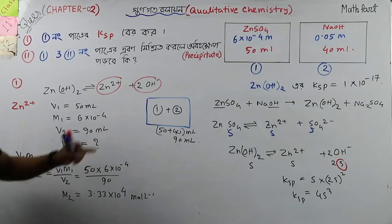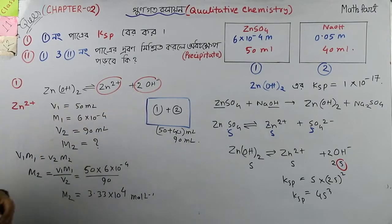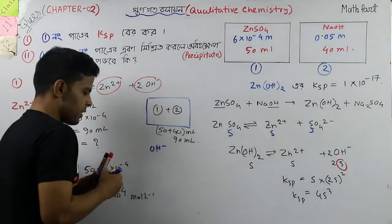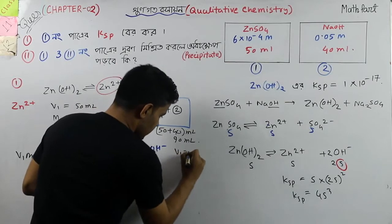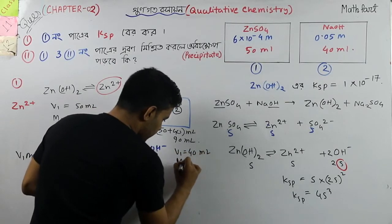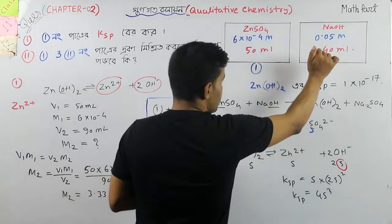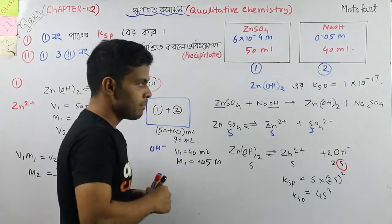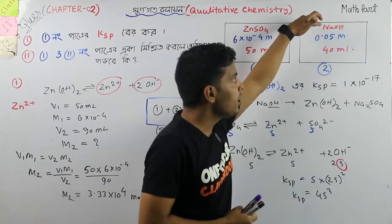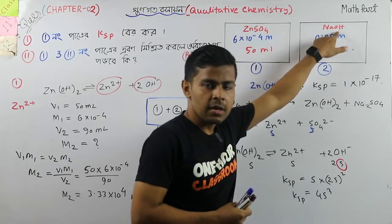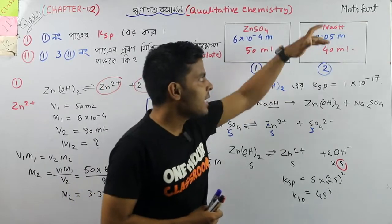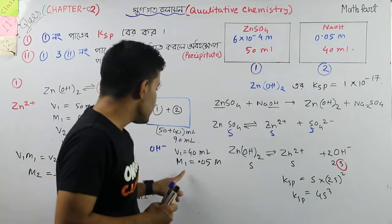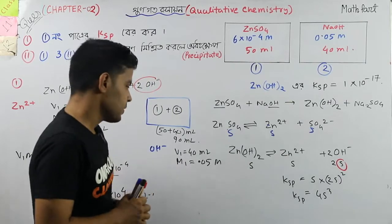What is OH ion? So if we look at OH ion, V1 is 40. V1 is 40 ml. M1 is for the NaOH ion at 40 ml. The first value is the OH ion from NaOH, which is 40.